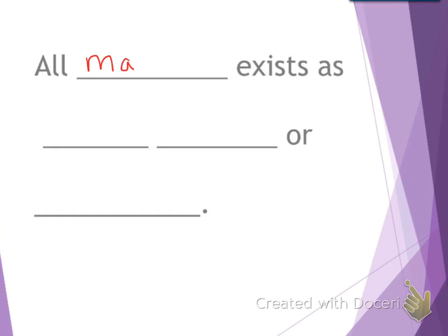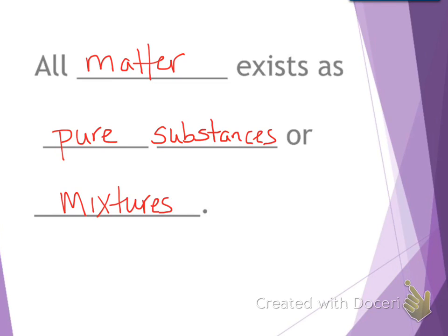So first, we know all matter exists as pure substances or mixtures. And maybe you've not really given that any thought before, so maybe you didn't really know it, but think about that. A solid, liquid, or gas, is it made up of only one thing, or is it made up of several things?